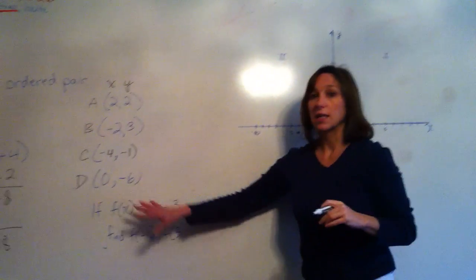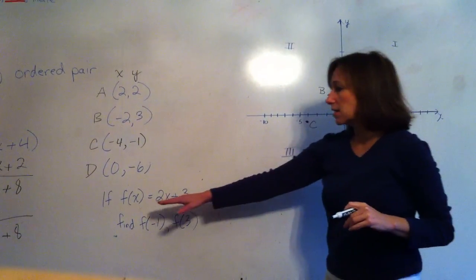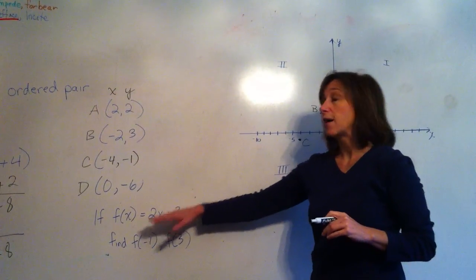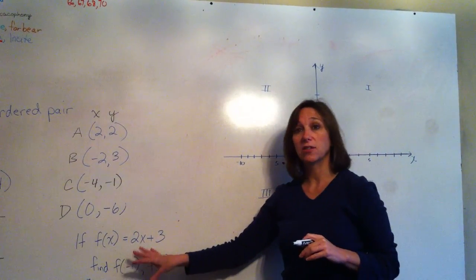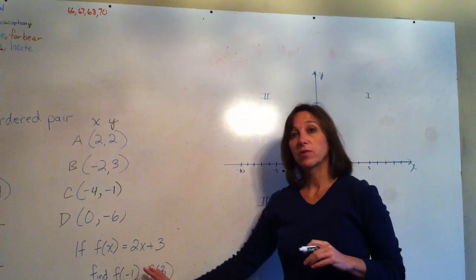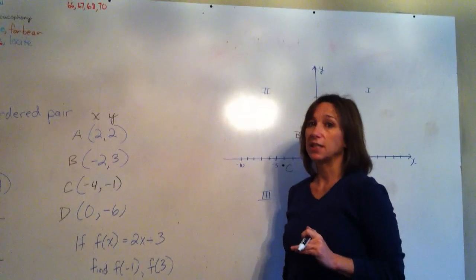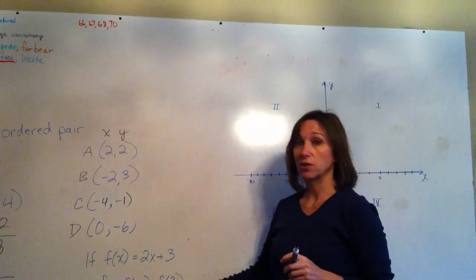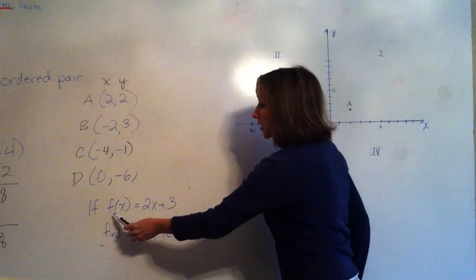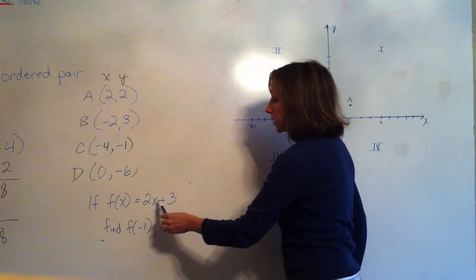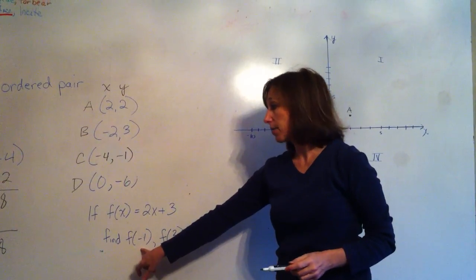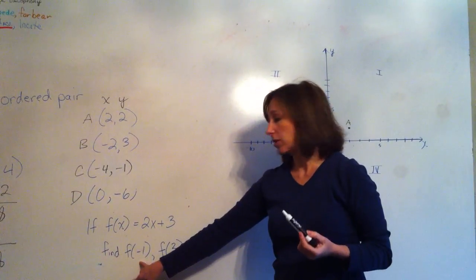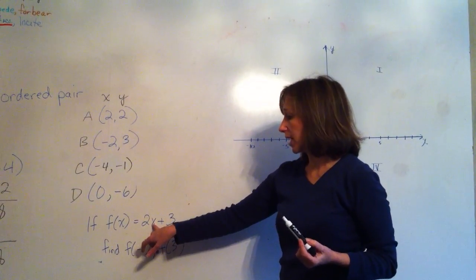And the last thing of this lesson is function notation. This is what we're going to graph on our coordinate system in the future. You need to be very familiar with function notation. You're going to see it on the SAT and in all different things you do in the future. So this function is f(x) = 2x + 3. And they want you to find f(-1). So all that means is we're going to put a -1 in where the x is.